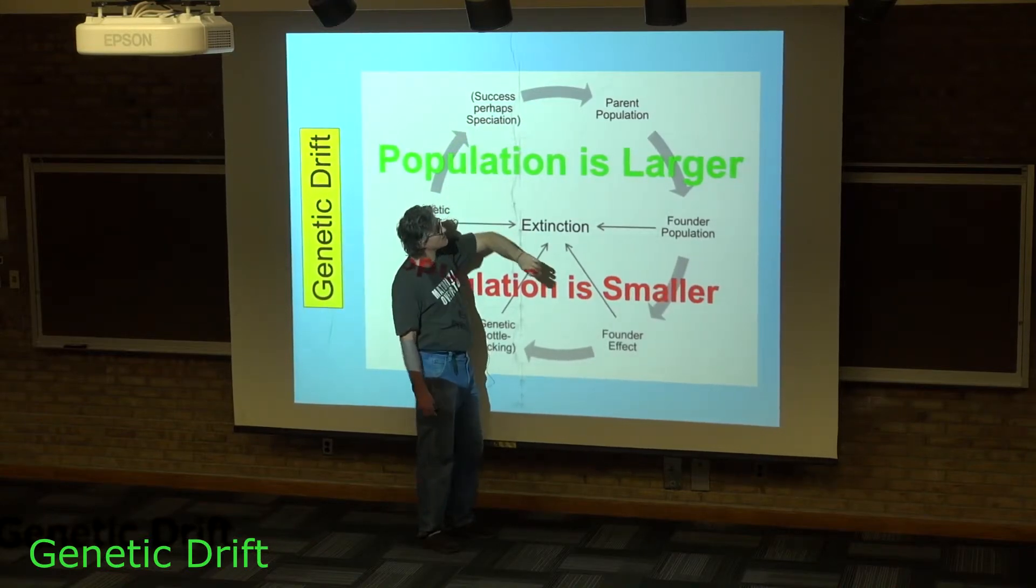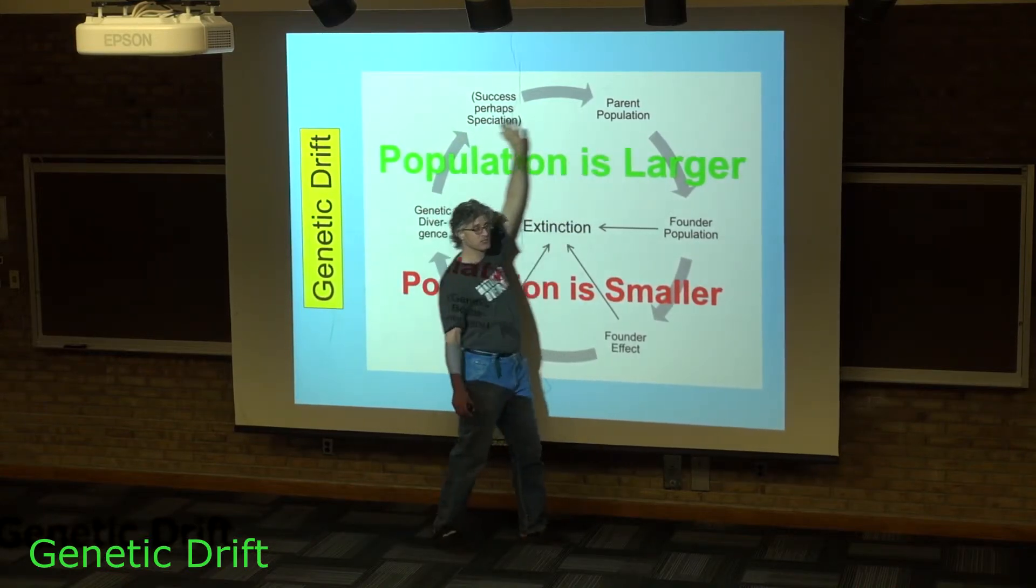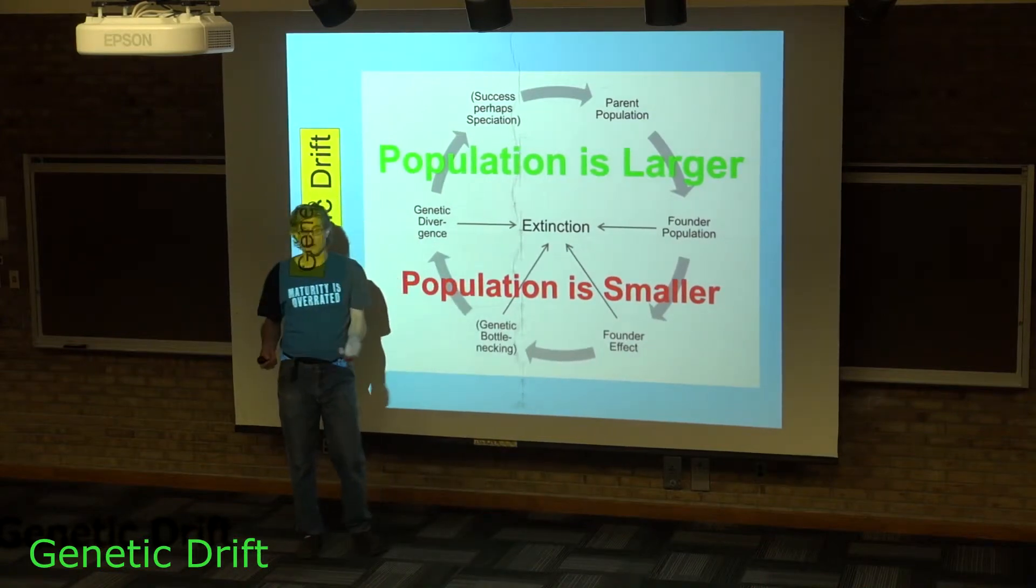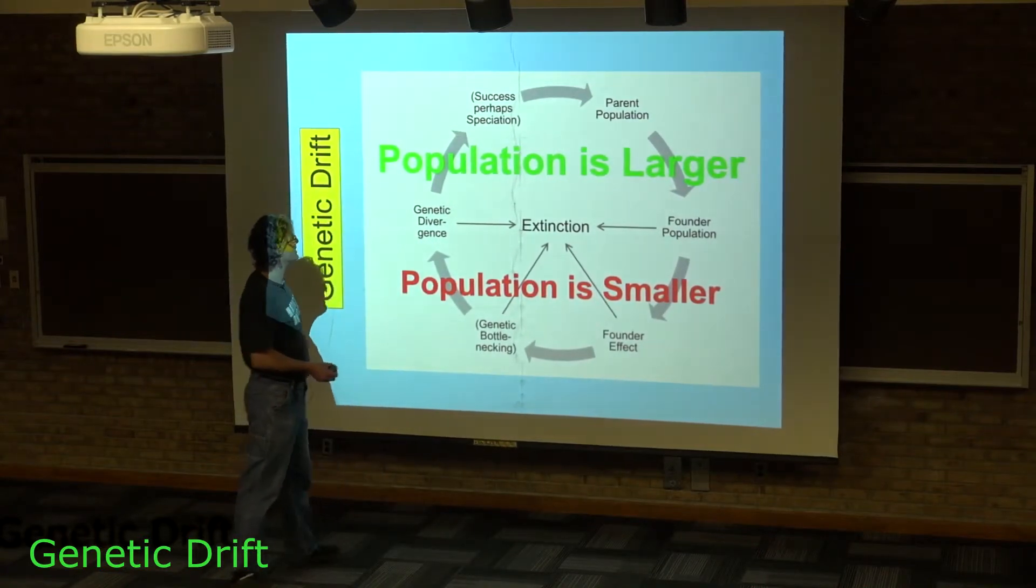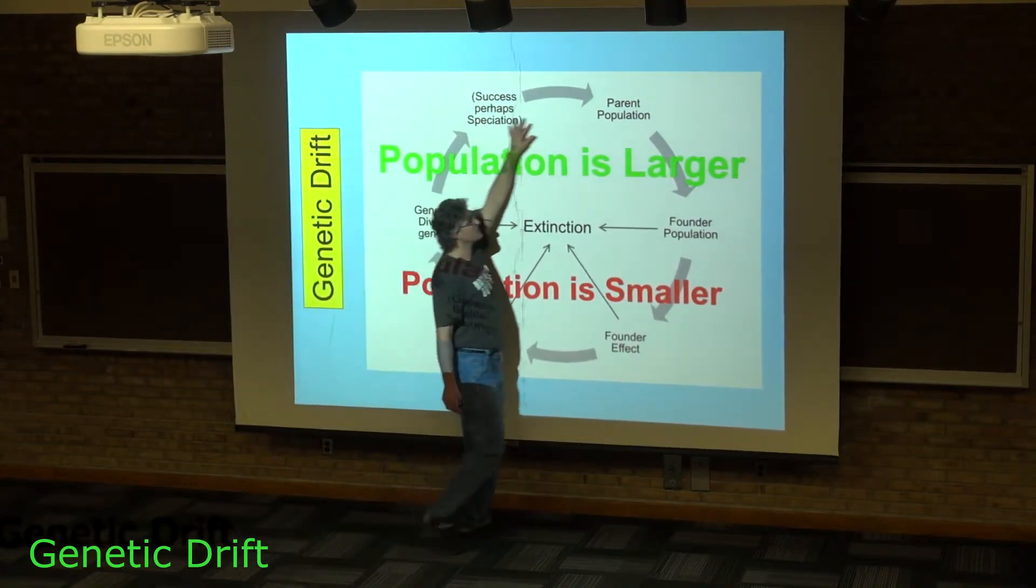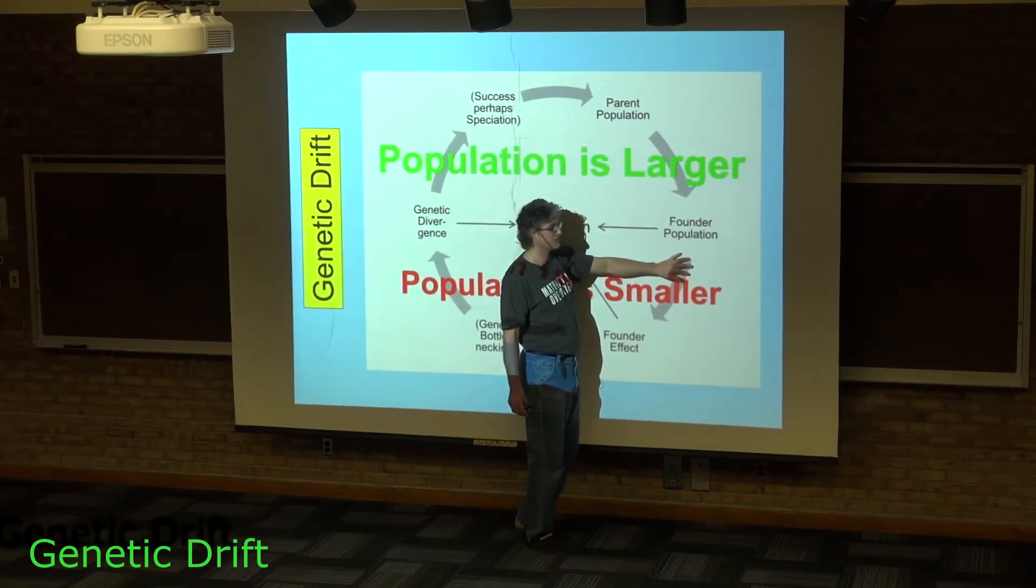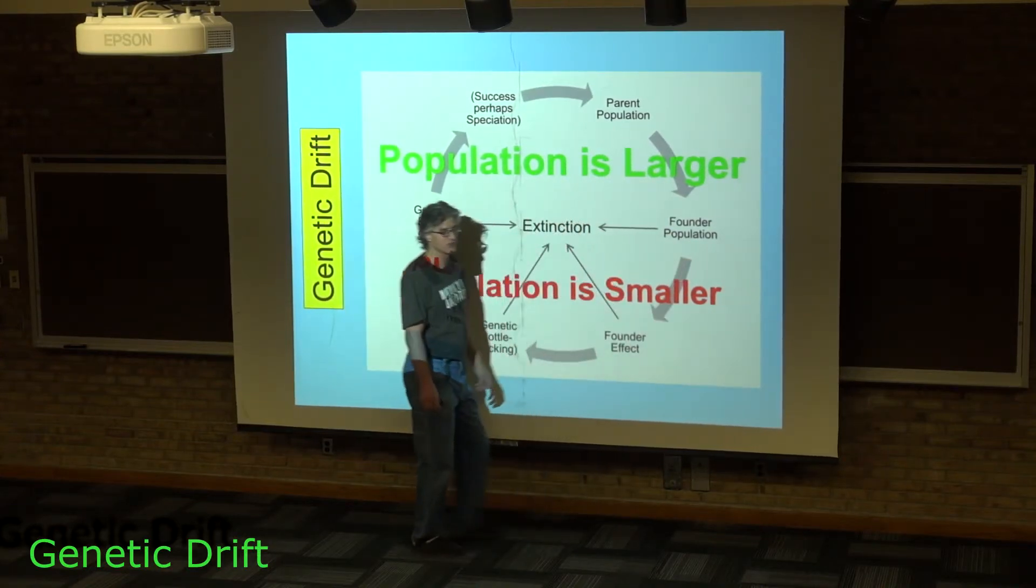Now that you have a population that is not only distinct from the original population genetically, but actually is a viable ongoing population unto itself, it can serve as some parental population that could give rise to a founder population and so on and so forth.